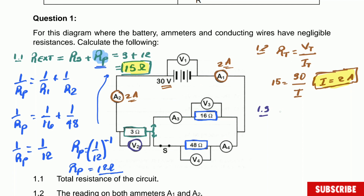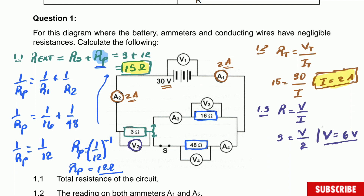Using R = V/I for the 3 ohm resistor: resistance is 3, and we're solving for V. The current is the same throughout, because in a series circuit current is constant — it only splits in the parallel part. Rearranging, the potential difference equals 6 volts. So 6 volts is the potential difference across the 3 ohm resistor.